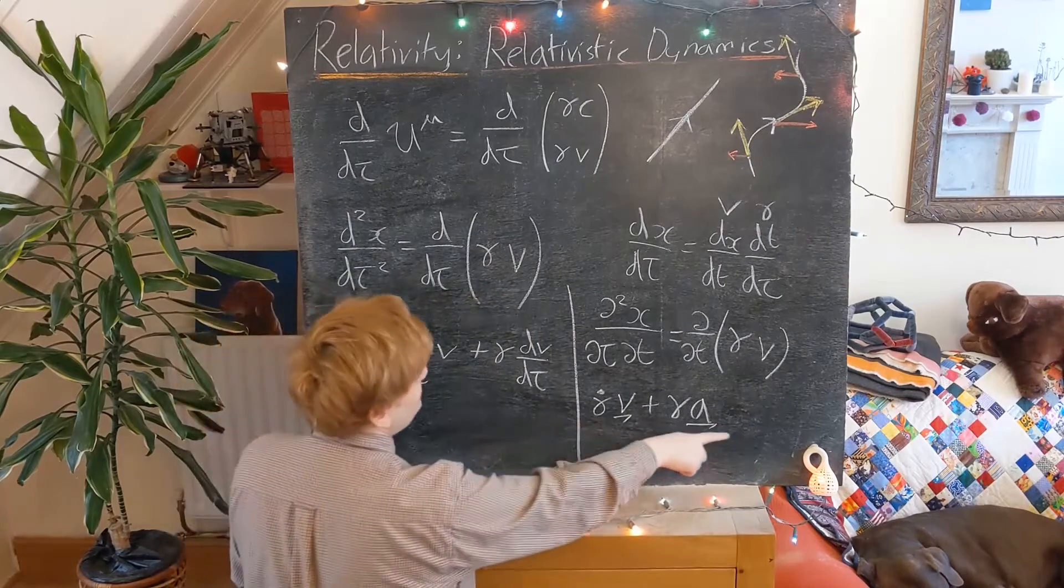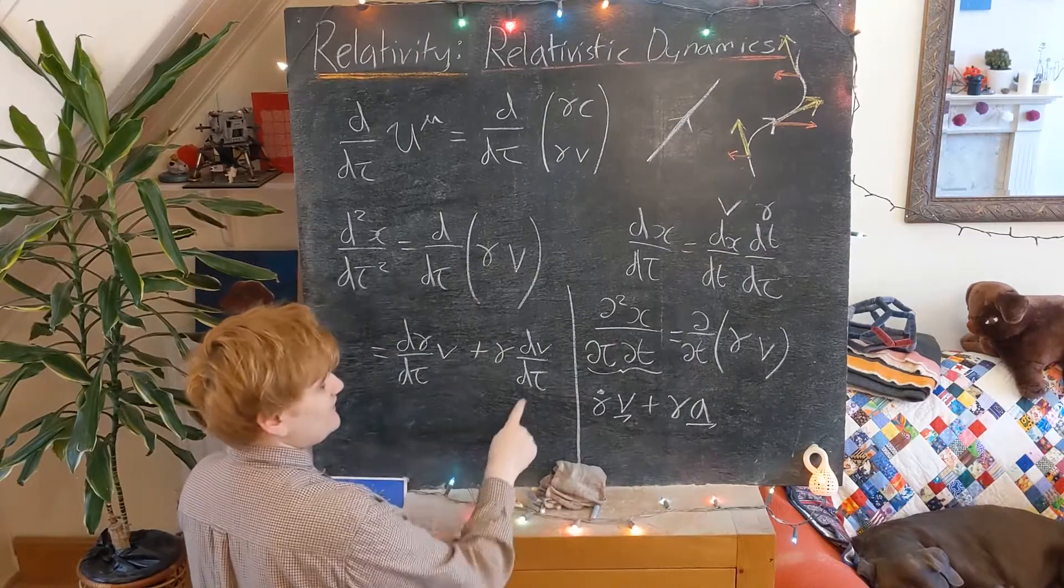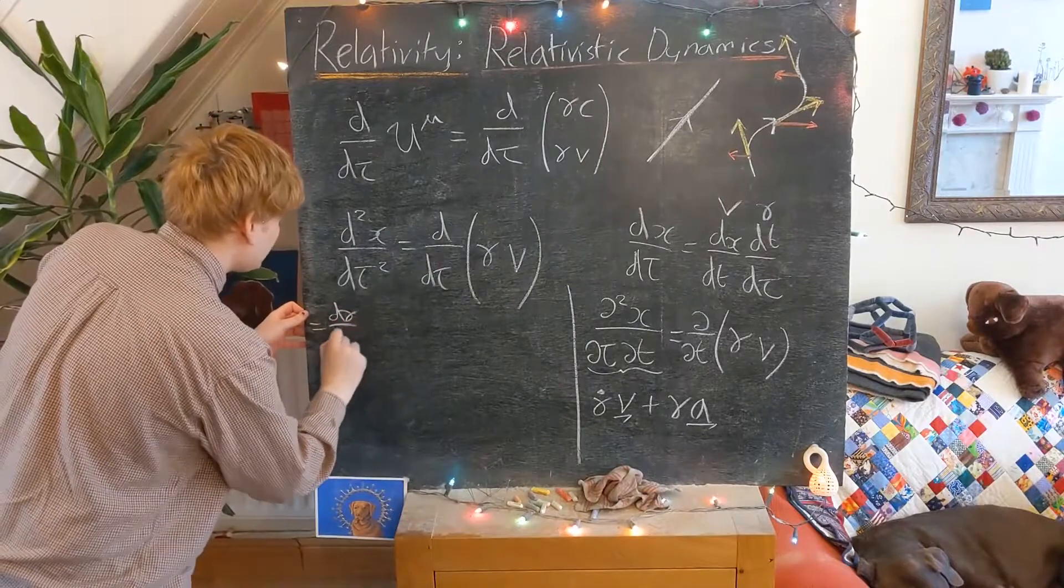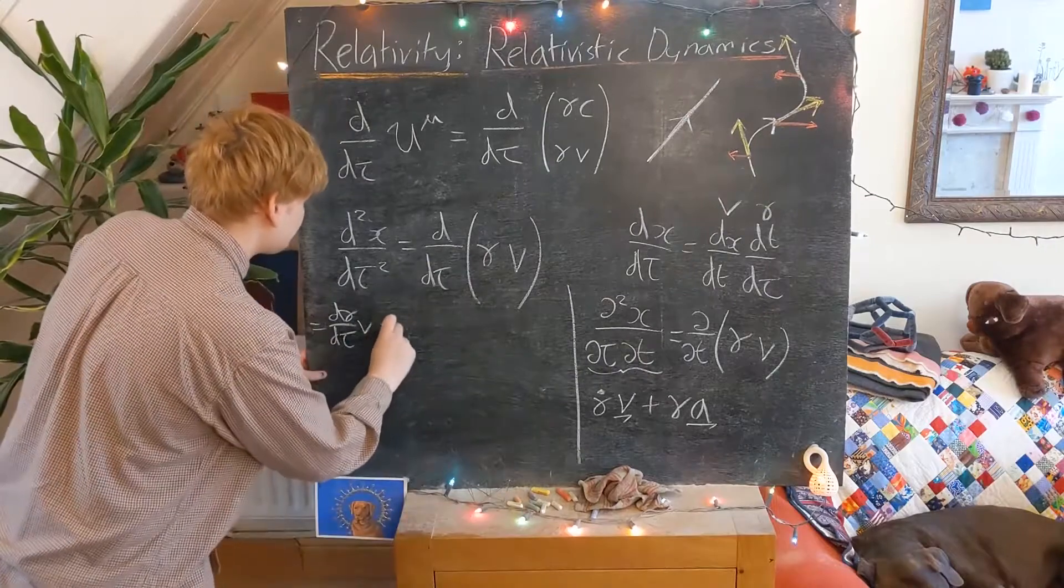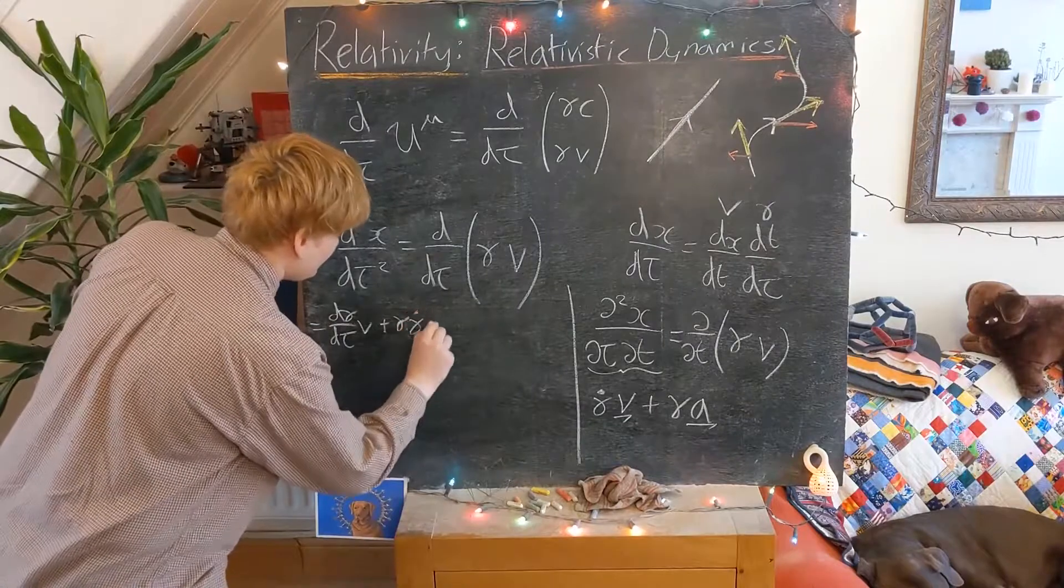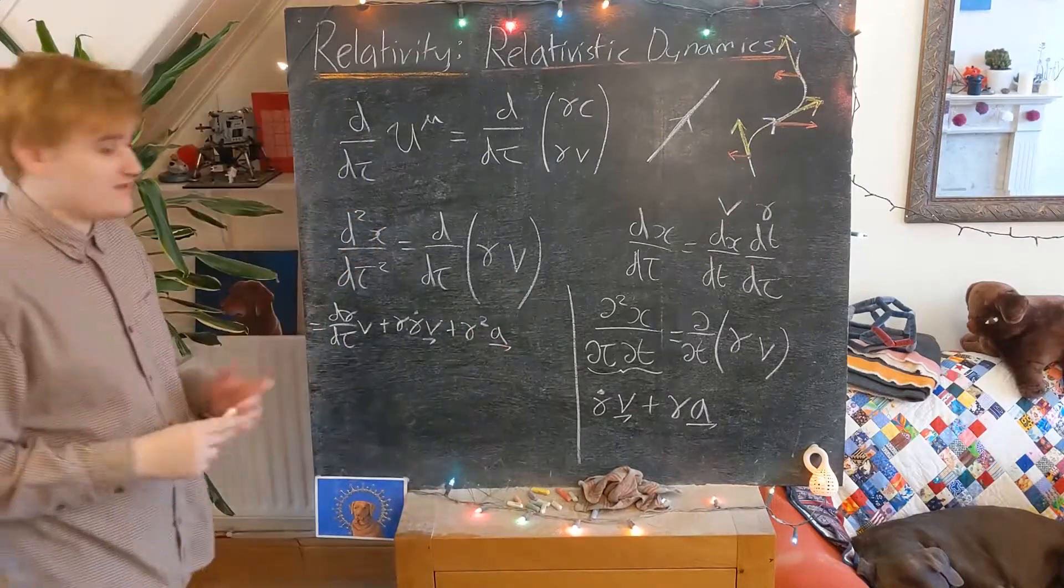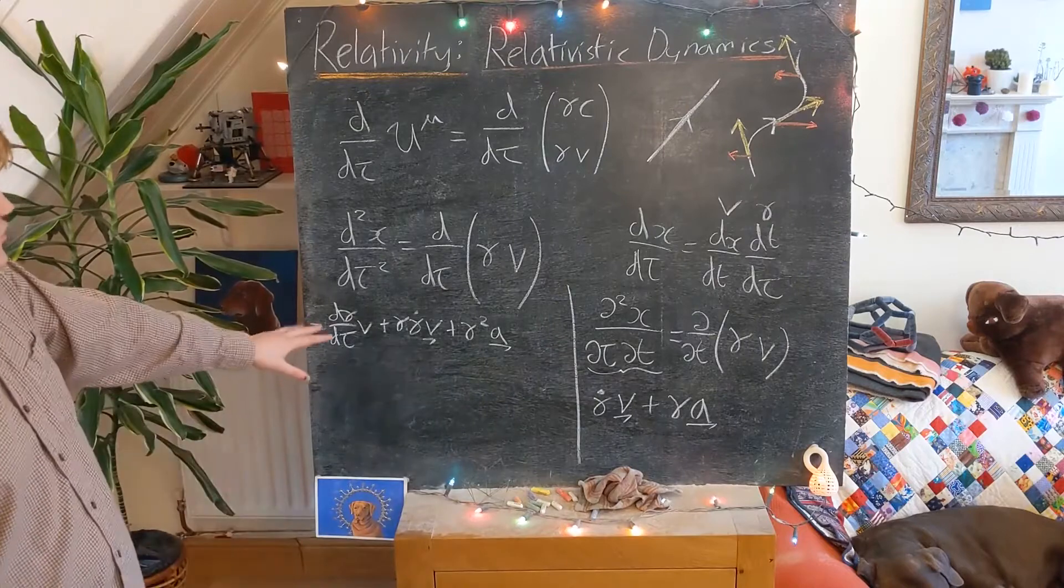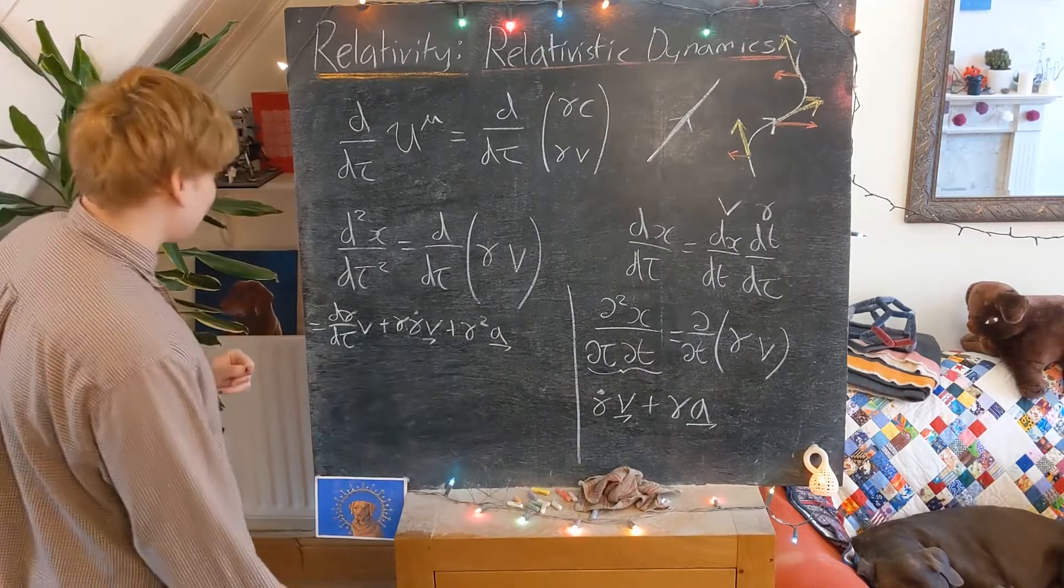And so if I substitute in now that this mixed partial derivative is equal to this in here, I'm going to have to rewrite it. So I'm going to have a d gamma by d tau v, and then plus gamma times this thing, gamma dot v, plus gamma squared a. So already this is starting to look pretty hideous and we're not really learning anything too much more from writing all these terms out. We're just getting more and more needlessly complicated.